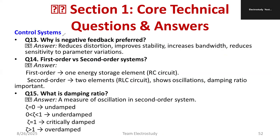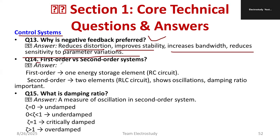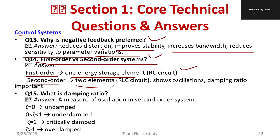From control systems: why is negative feedback preferred? Because it reduces distortion, improves stability, increases bandwidth, and reduces sensitivity to parameter variation. Difference between first and second order systems: a first-order system has one energy storage element (e.g., RC circuit), while a second-order system has two elements (e.g., RLC circuit) and shows oscillation and damping. The denominator polynomial power is 1 for first order and 2 for second order.